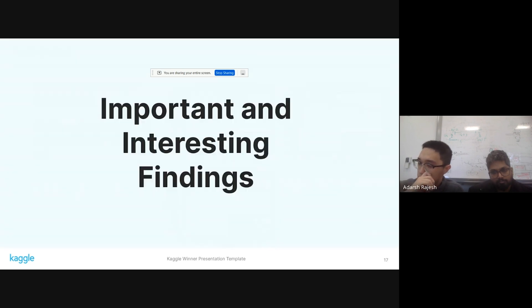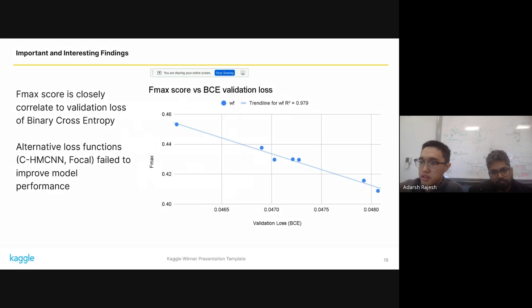So some important, interesting findings we observed is that, first of all, we found that the BCE loss that we use tracked really well with the FMAX score from the public leaderboard data set. We tried various other loss functions, one of which we tracked quite a bit, took like a week to find out that it didn't work, was this hierarchical loss function. We just couldn't find a better way other than BCE training.